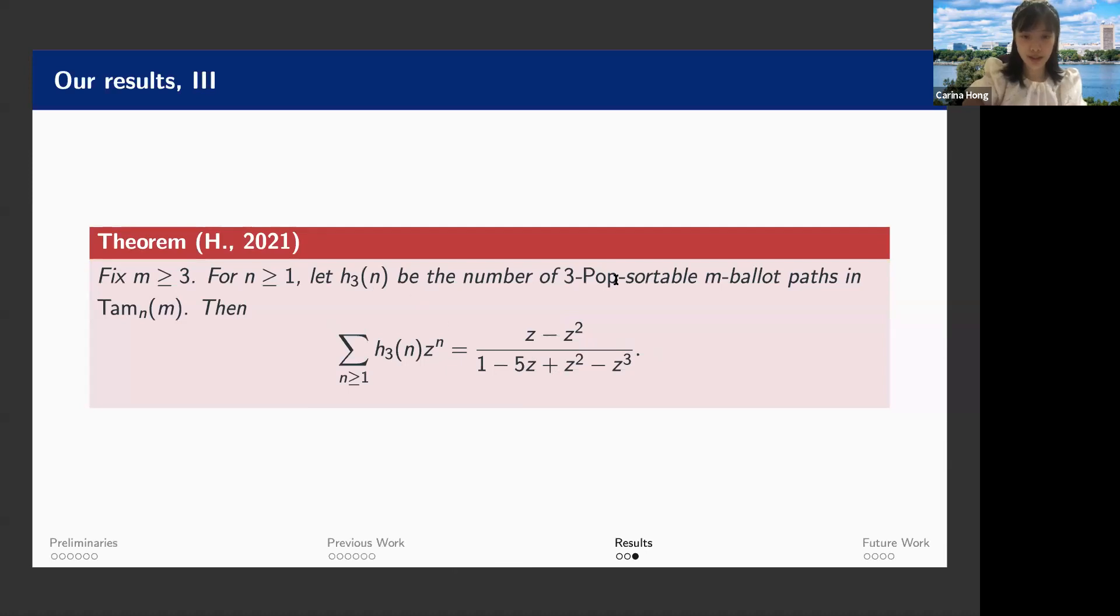Our third result enumerated the number of three pop sortable elements. This is the exact generating function we are able to find. And we kind of conjectured that when we are talking about two here, there is a three, and here's a five, it is interesting to see whether it will always be this two n minus one in this coefficient of the z to the one term in the denominator. This is something that one might look into. It's very nice observation. And so this concludes the part of our results on Tamari lattices.